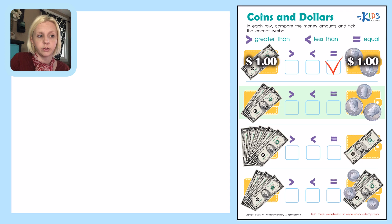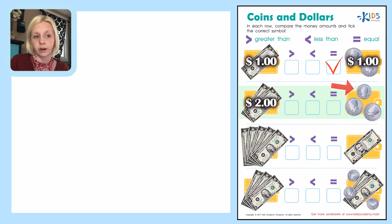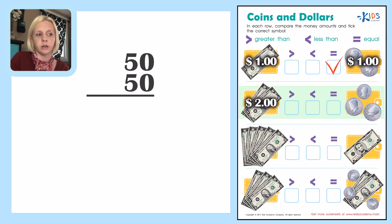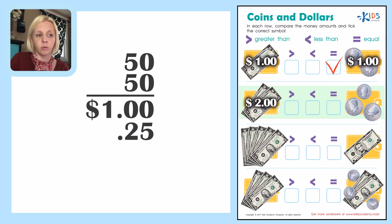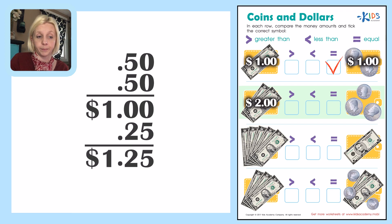The next one: we've got two dollar bills, so we write that out — two dollars. On the other side we have two 50-cent pieces and a 25-cent piece. We already know two 50-cent pieces equal one dollar, so we need to add 25 cents. Line up the decimal: zero plus five is five, zero plus two is two, bring down the decimal and the dollar — that gives us a dollar twenty-five.